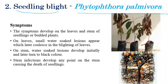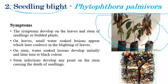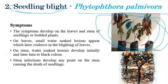The next disease is Seedling Blight, caused by Phytophthora palmivora. As the name indicates, seedlings are blighted. During nursery stages, young seedlings may be blighted. Initially, small brown water-soaked lesions appear on leaves; these lesions coalesce and a blighting appearance of leaves can be observed.